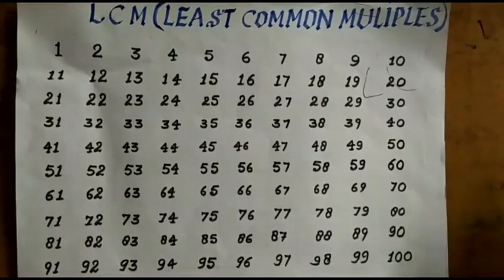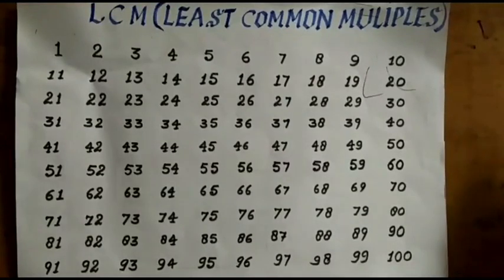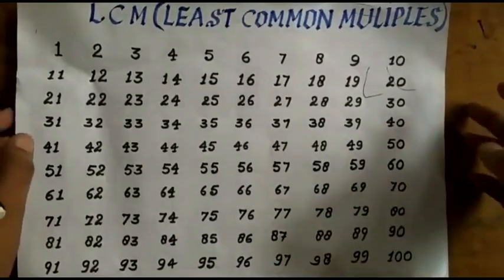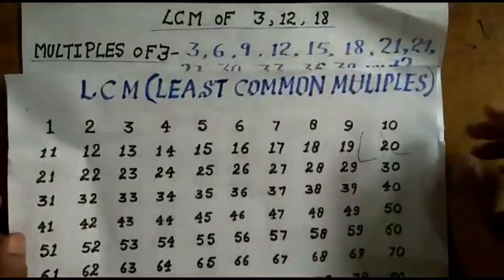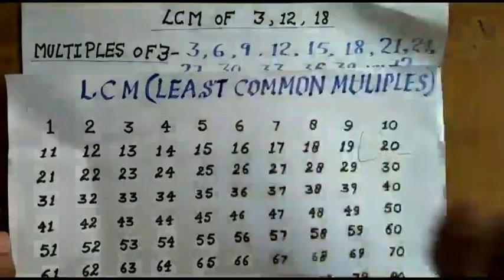So students first we will prepare a chart of counting numbers 1 to 100. And to find LCM we will select three numbers 3, 12 and 18.